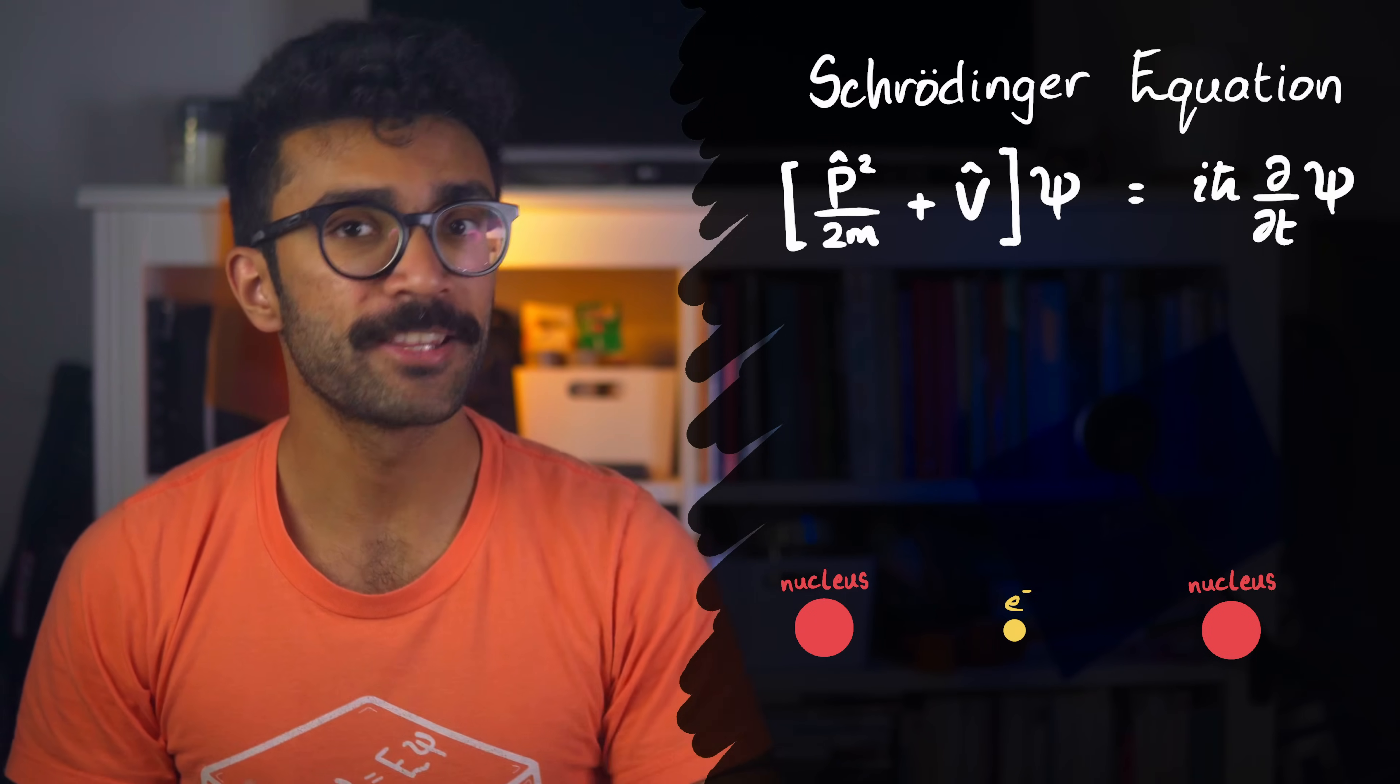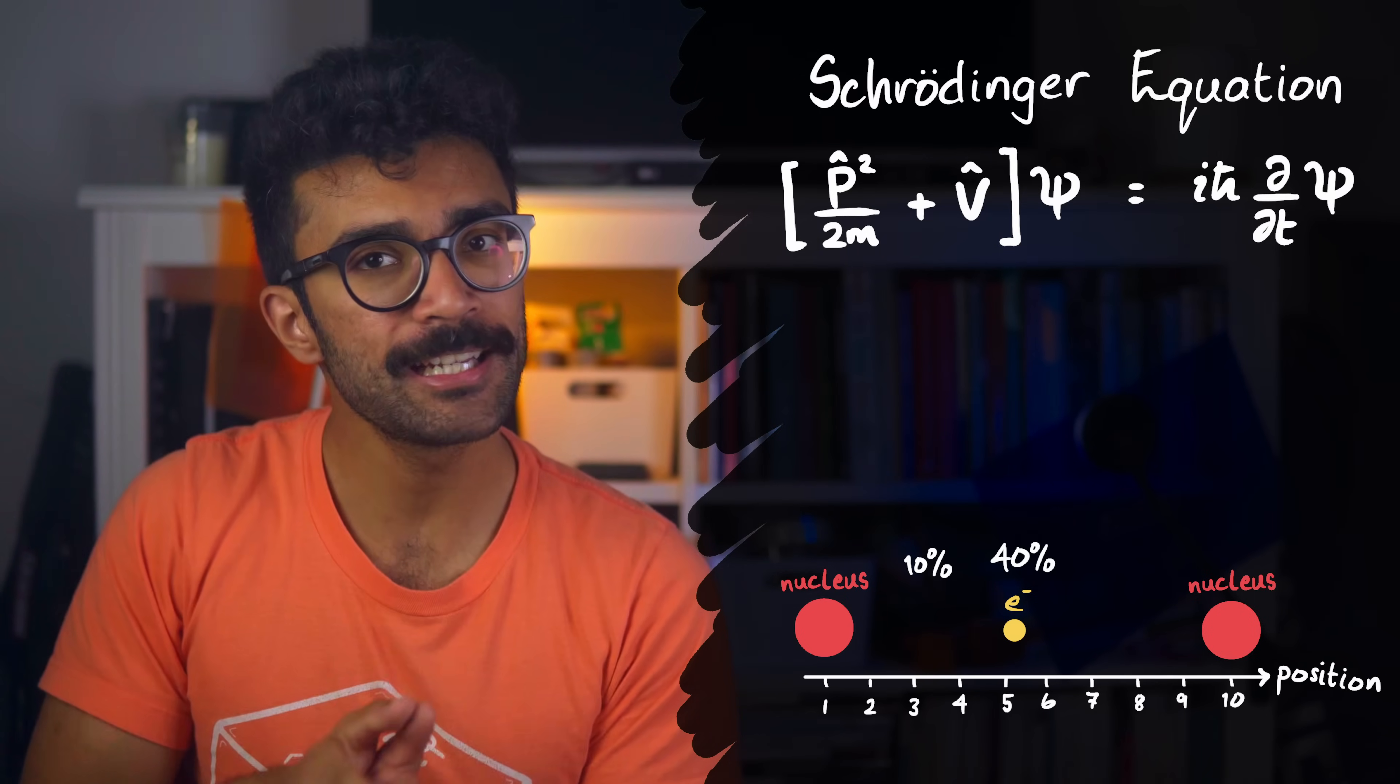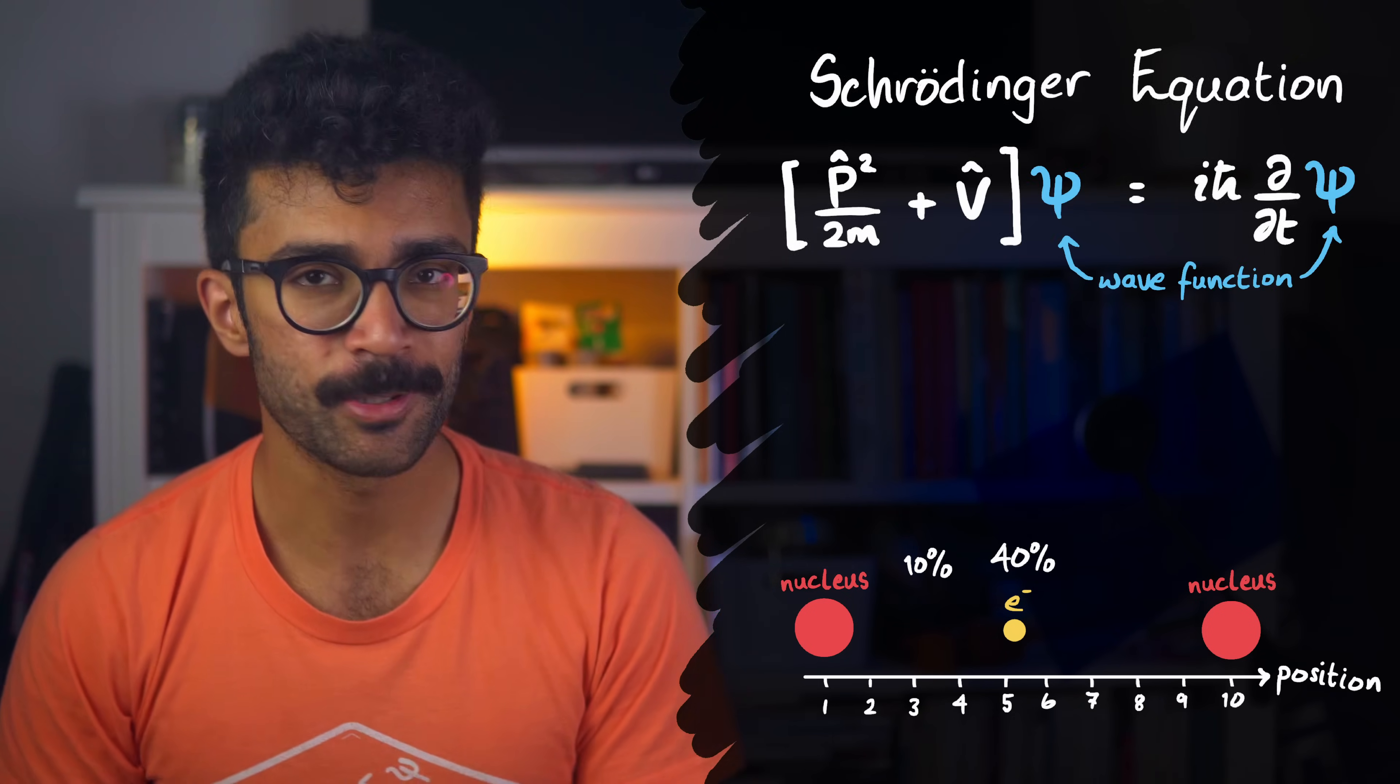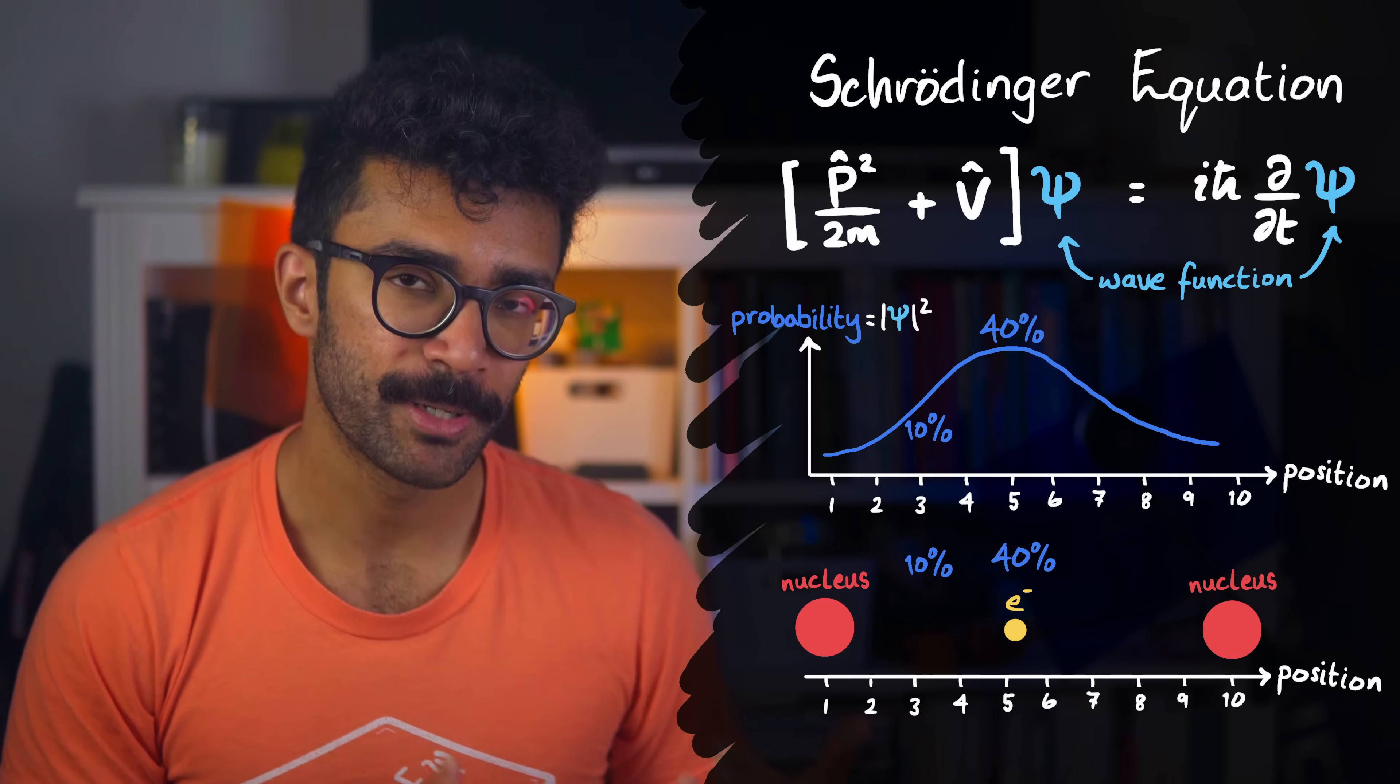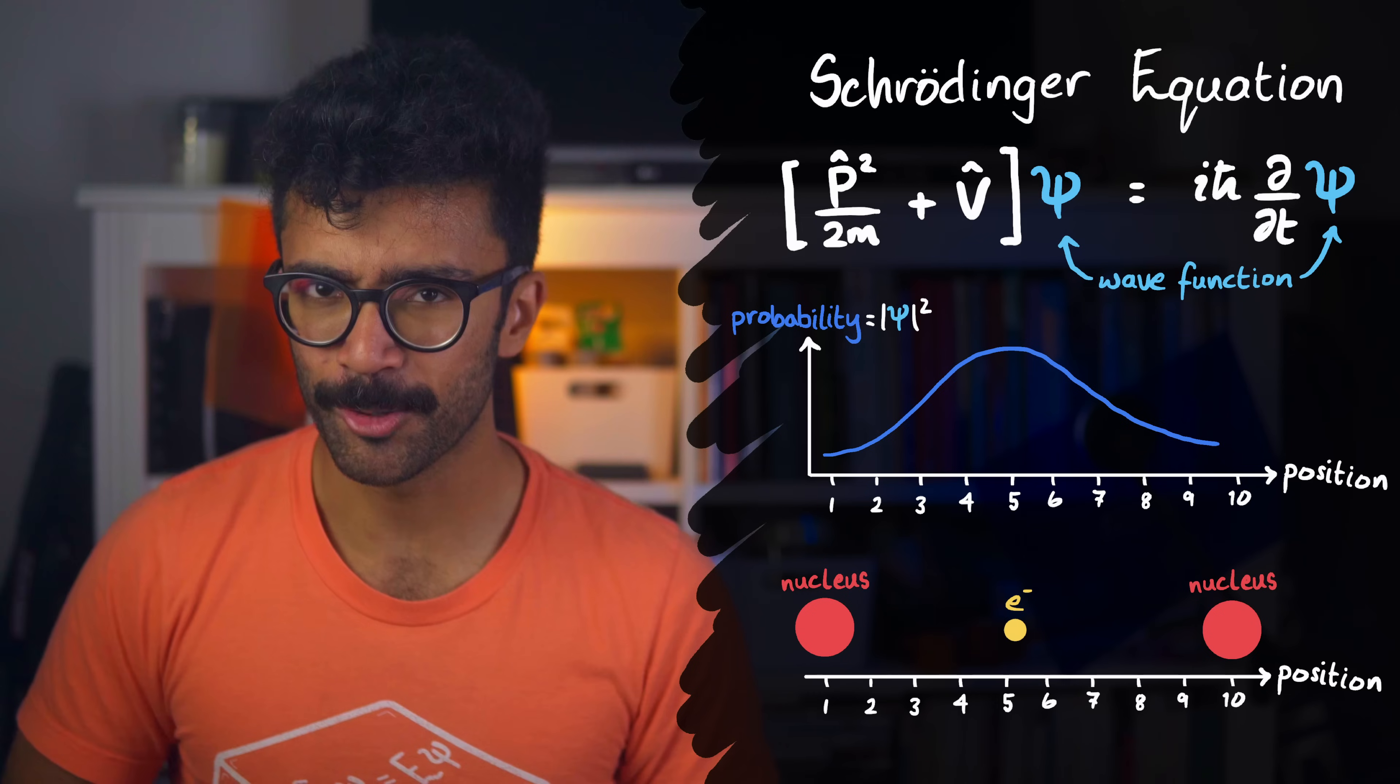And it then allows us to find out things about the electron, which is primarily what we're studying. For example, we could calculate how likely we are to find the electron at different positions in between the two nuclei. That's what this quantity psi, the wave function, is directly related to. It's known as a wave function because it can move through space and change over time like a wave, but this time it's kind of a wave of probability almost.